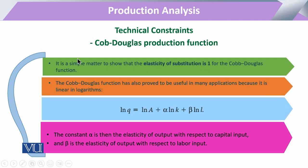The Cobb-Douglas production function has the property that it can exhibit all three returns to scale: constant, increasing, and decreasing. Additionally, it is linear in logarithms, making it simple to decompose. When we convert the function to log form, it becomes: ln Q = ln A + alpha·ln K + beta·ln L, allowing the effects of technology, capital, and labor to be separately identified and summed.